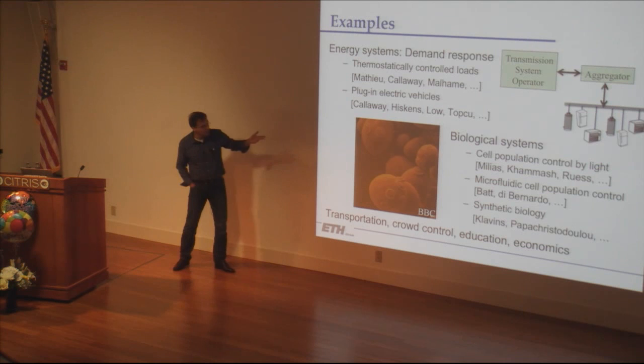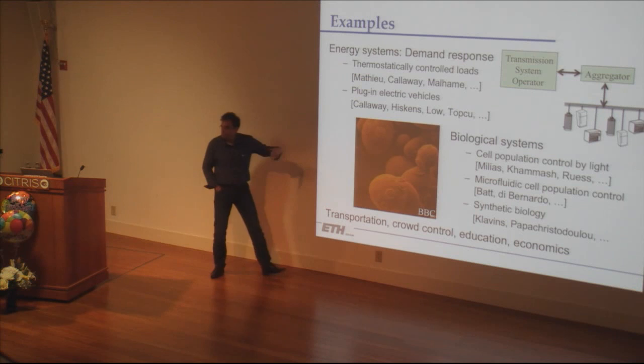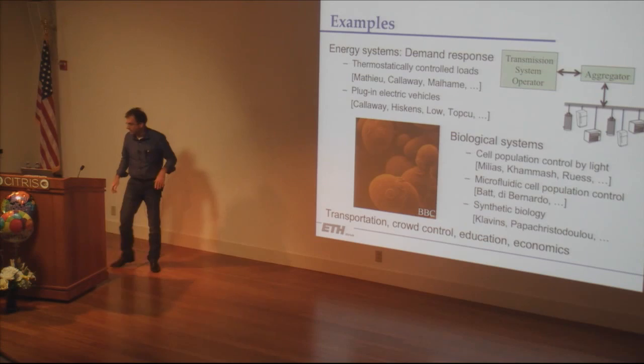In biology systems we look at population control using light — shining light at cells and trying to get them to do something useful all together — though there are other people who do this with microfluidic devices, adding chemicals and so on. The same pattern appears in transportation, crowd control, and so on.